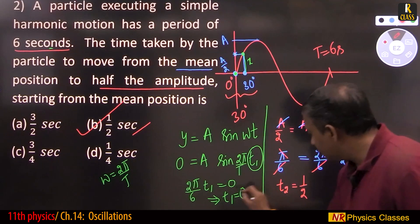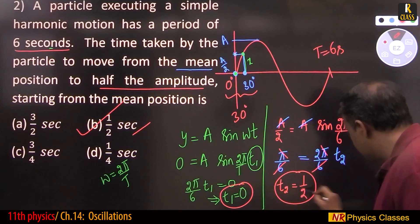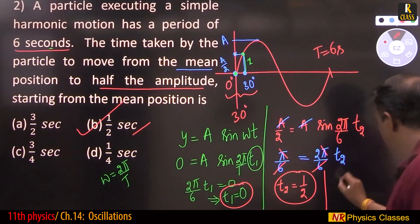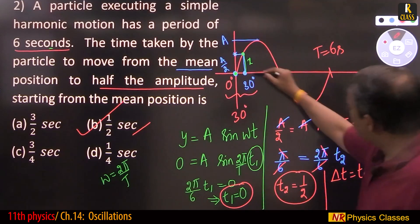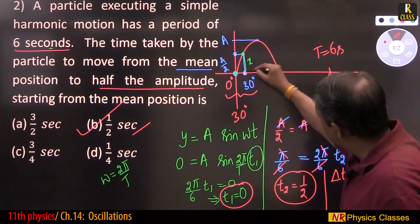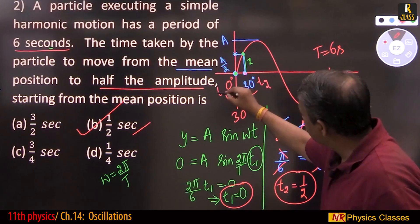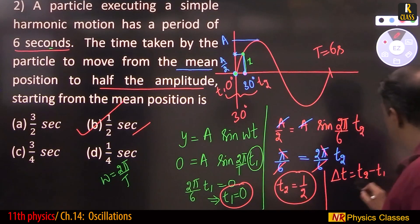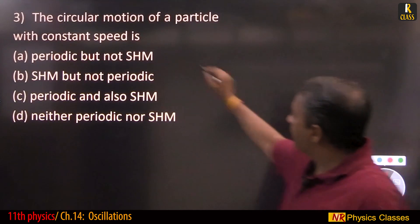The time interval Δt = t2 − t1 = 1/2 − 0 = 1/2 second. The answer is half a second.